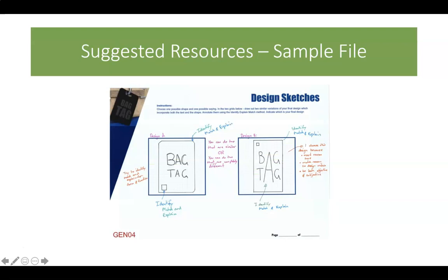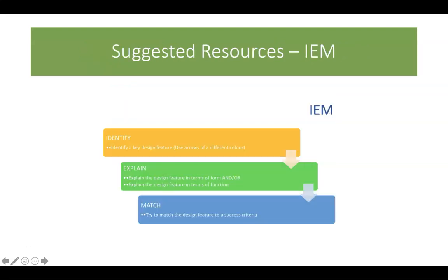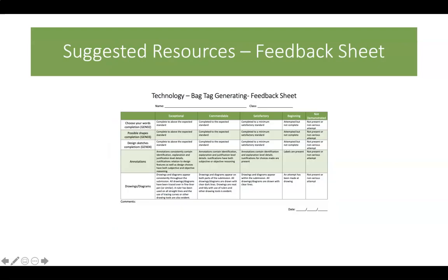You can see here that I've used the identify, explain, match method, and I've used different colors to differentiate what I'm doing with the text. We're going to identify key features, explain that particular feature in terms of form or function — what it looks like and how it works — and then match that back to one of our design criteria.